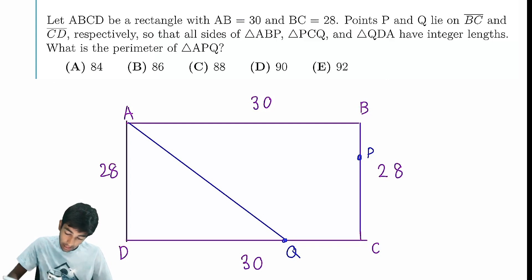So all these right triangles have integer lengths. If you know Pythagorean triples, then all you have to do is look for Pythagorean triples. If you know your standard ones, this should not be that difficult.